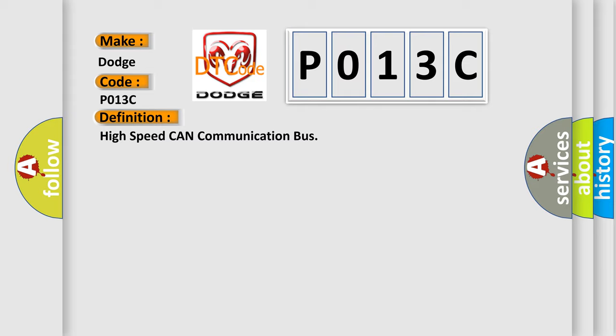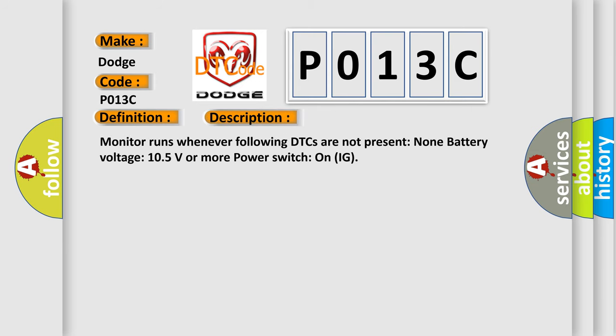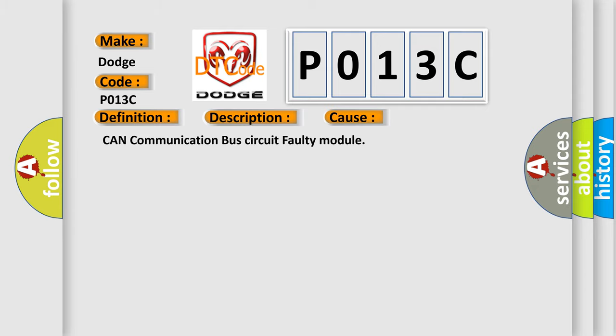Here is a short description of this DTC code. The monitor runs whenever the following DTCs are not present: None. Battery voltage must be 10.5 volts or more, with power switch on ignition. This diagnostic error occurs most often due to a faulty CAN communication bus circuit or module.